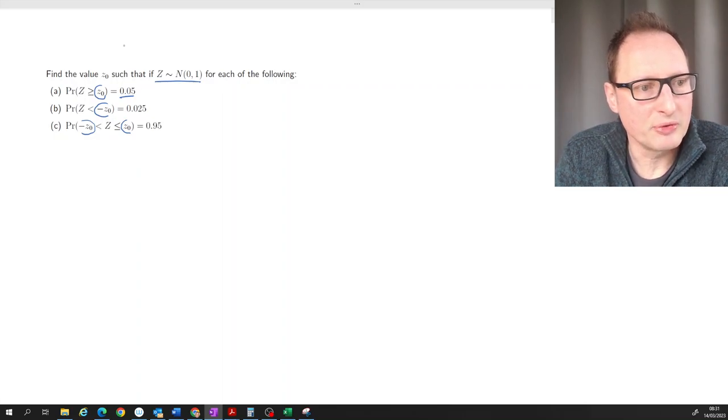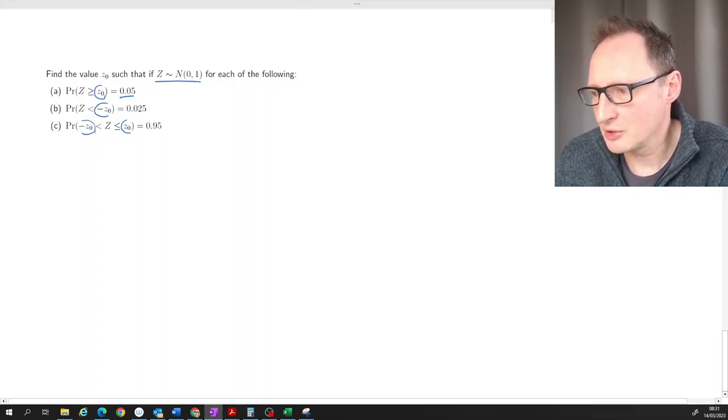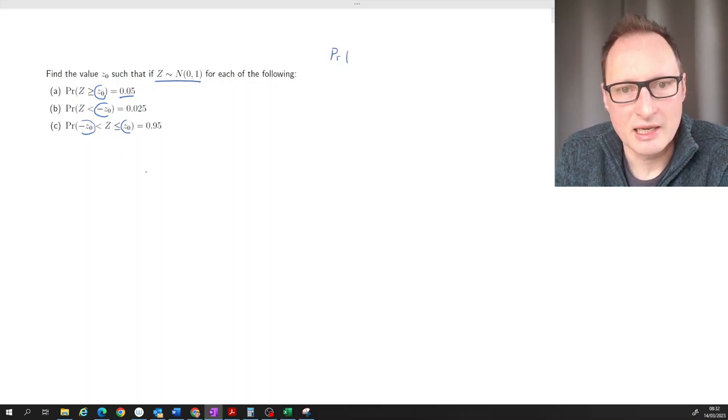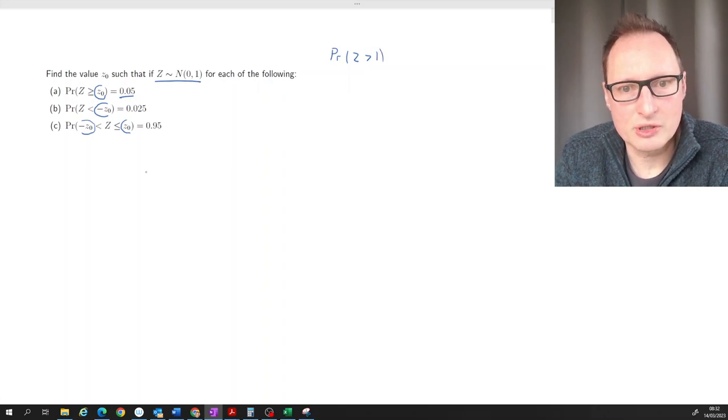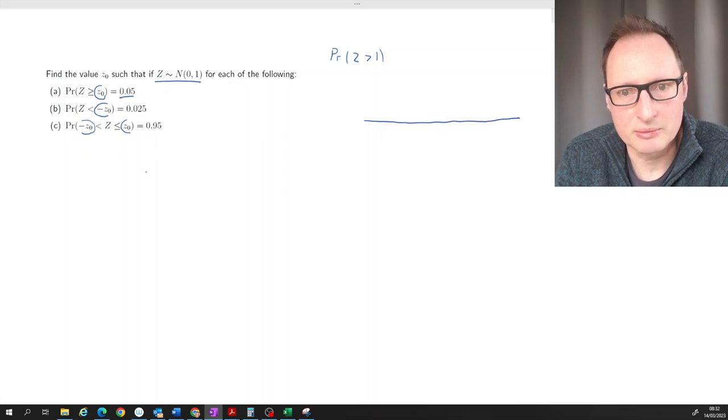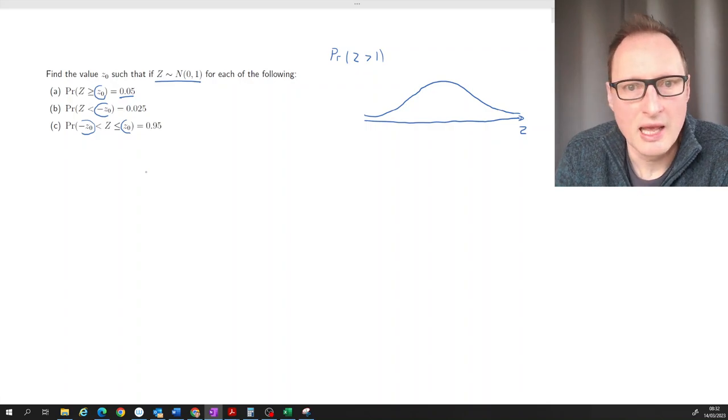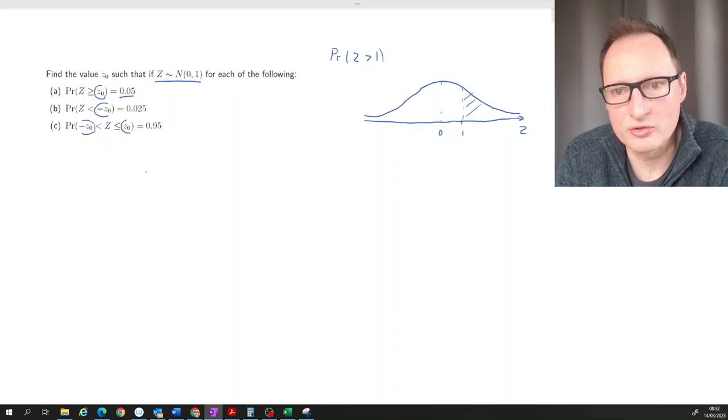Before we do that, let's look at a more traditional type of example. If you were asked to calculate the probability that a standard normal value is larger than one, how would you solve that? I always recommend using sketches for this. Let's sketch the standard normal distribution. We know the mean is at zero, and we're being asked for a value of one, so we would be asked for this probability.